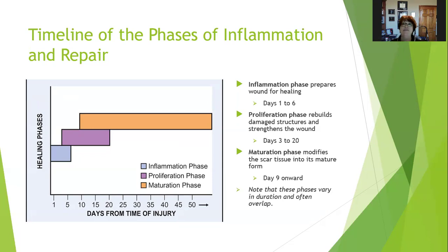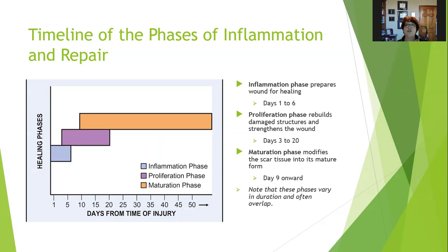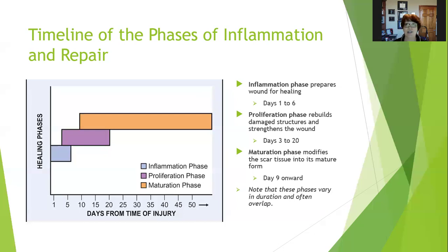The proliferation phase rebuilds damaged structures and strengthens the wound, and that can be anywhere from day three to day twenty — so the early part of the injury, and that's usually when we're seeing people. The maturation phase modifies the scar tissue into its mature form, and that's from day nine onward, so we're seeing people during the early part of the maturation phase. It's going to differ from person to person, but especially with surgical wounds and other scarring, you can look at the scar and kind of tell what phase they're in. They don't need that sign around their neck.